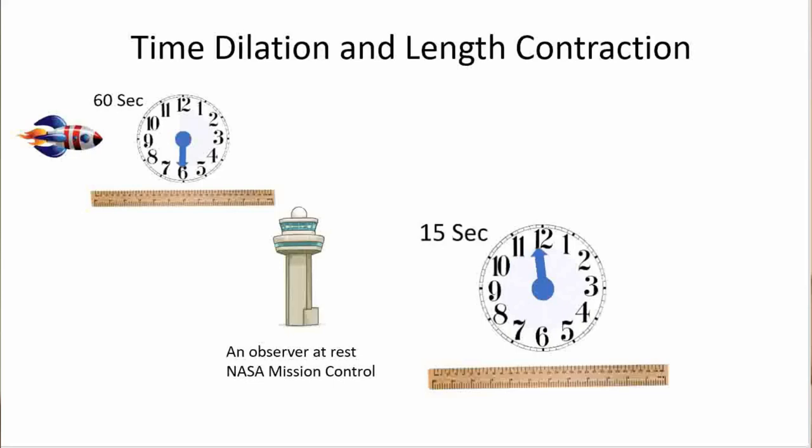What this means is that the twin who left earth on the spaceship traveling near the speed of light and came back would find his brother or sister to be much older than he or she is. This illustrates the differences between the lapse of time of different clocks in different reference frames.